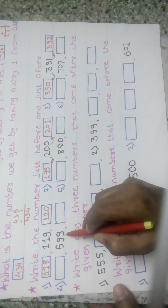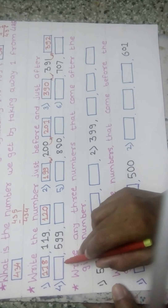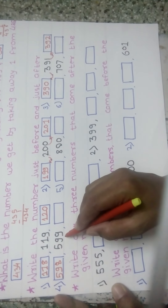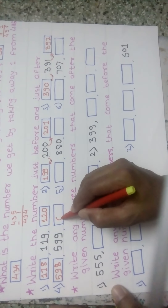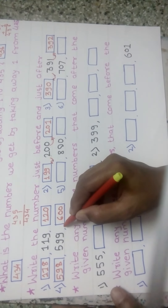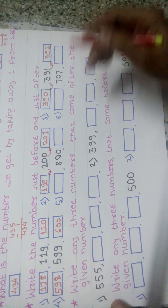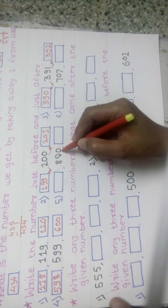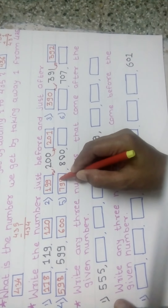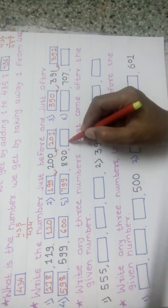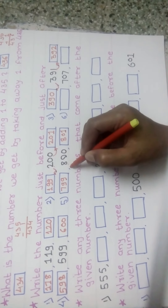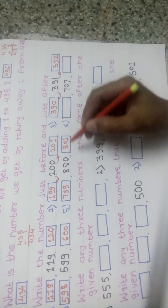Next example: the number is 599. The number before 599 is 598, and the number after 599 is 600. Here we write the number just before and just after. Next example: the number given is 800. The number before 800 is 799, and the number after 800 is 801.